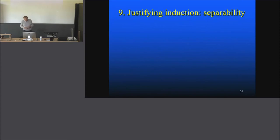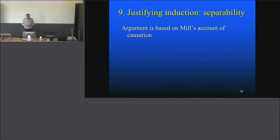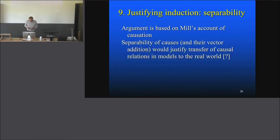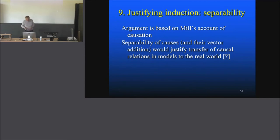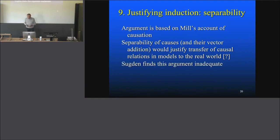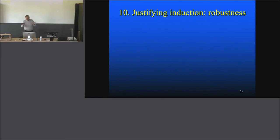He says there are several possible answers for justifying induction. First, justifying induction by separability, referring to an argument based on Mill's account of causation — John Stuart Mill, whom we know as an economist and moral philosopher from the 19th century. The separability of causes and vector addition would justify a transfer of causal relations from the model to the real world. Sugden dislikes this argument and finds it inadequate, and therefore says that's no way to go.